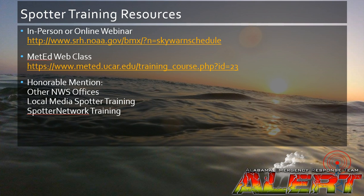You'll want to be a trained Skywarn spotter. There are a few ways to get spotter training. The first way we recommend is either in person or in an online webinar at the link displayed. The second way is METED, a training course provided by the National Weather Service. Other weather service offices also provide Skywarn training, and they may have different criteria for severe weather such as different hail report thresholds. There's also local news media spotter training and the Spotter Network spotter training, which is mandatory for all Spotter Network users. We recommend that every person refresh their training once a year.